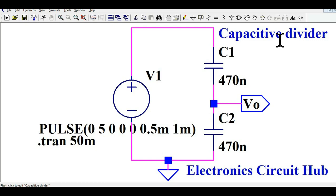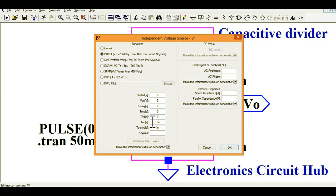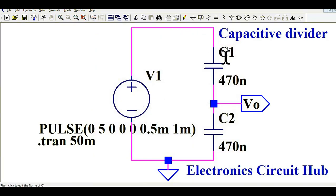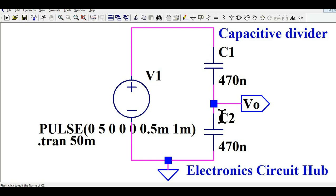I have drawn one capacitive divider circuit here. You can see a simple voltage source with an on-voltage of 5 volts, T-on of 0.5 milliseconds, and a time period of 1 millisecond. This is connected to C1 and C2, where the value for C1 is 417 nanofarad and C2 is also 417 nanofarad — this is called a balanced capacitive divider, meaning C1 equals C2.